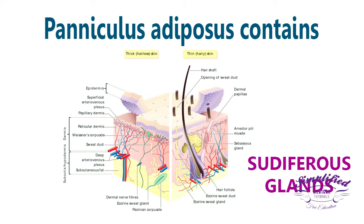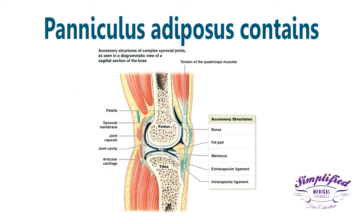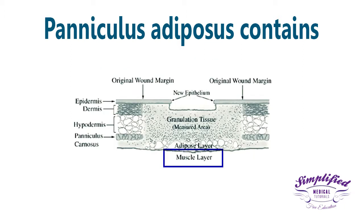The hypodermis also contains blood vessels, lymphatic vessels, hair follicles, the glandular part of some sudiferous glands, and nerve endings such as free nerve endings and Pacinian corpuscles.